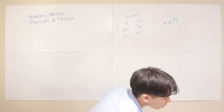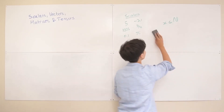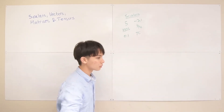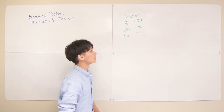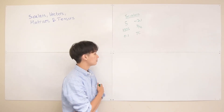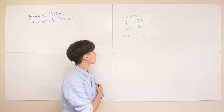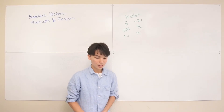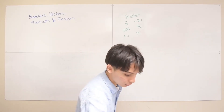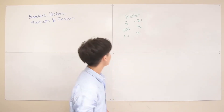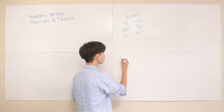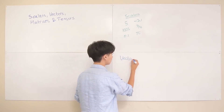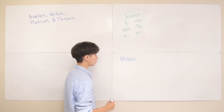So that's all I really wanted to mention about setting a variable. You know a variable is a scalar if it's a lowercase letter. Now let's move on to the next one, which is vectors. Vectors are essentially just lists of scalars.